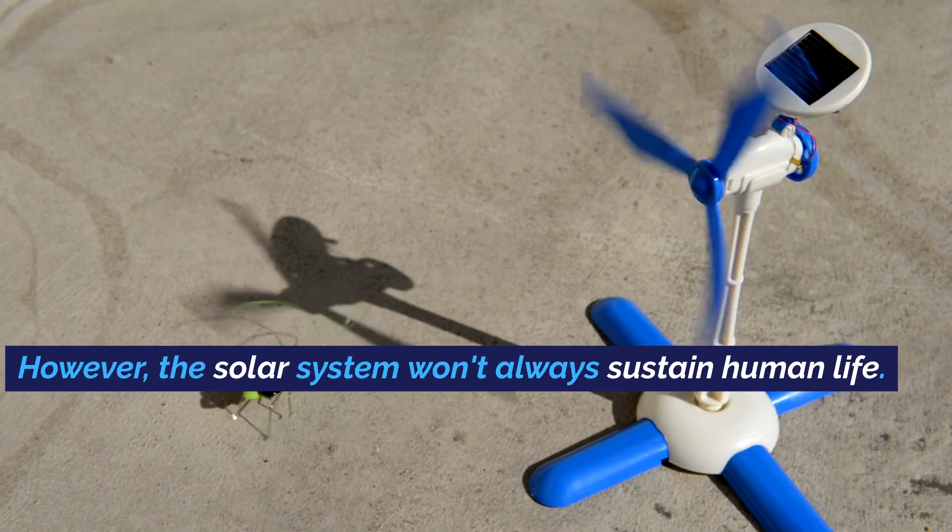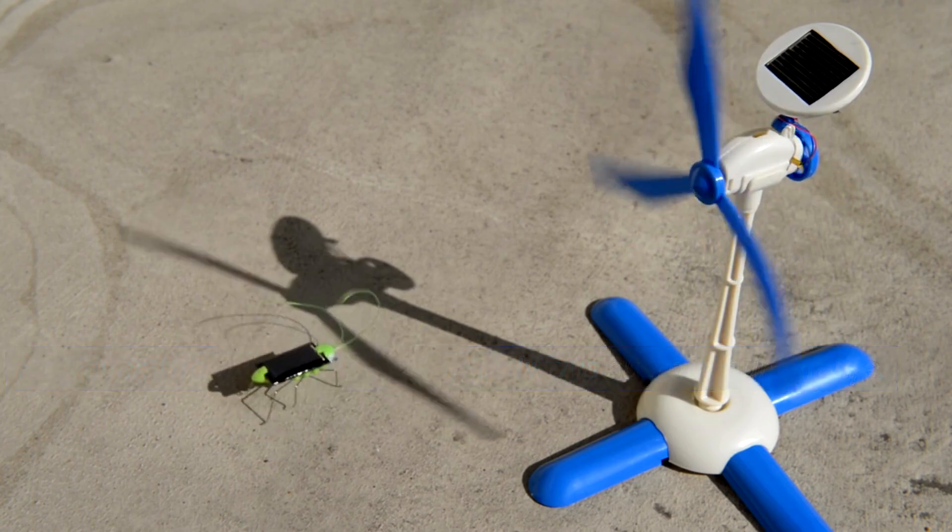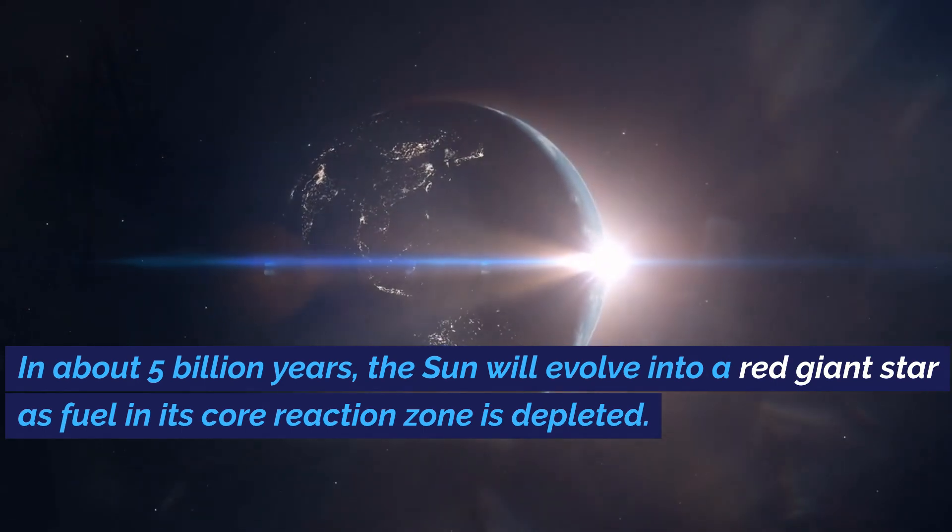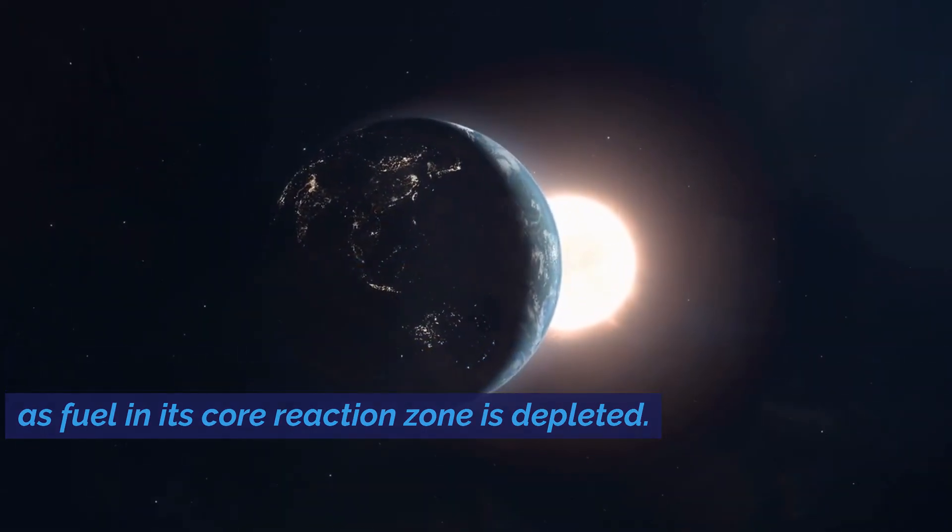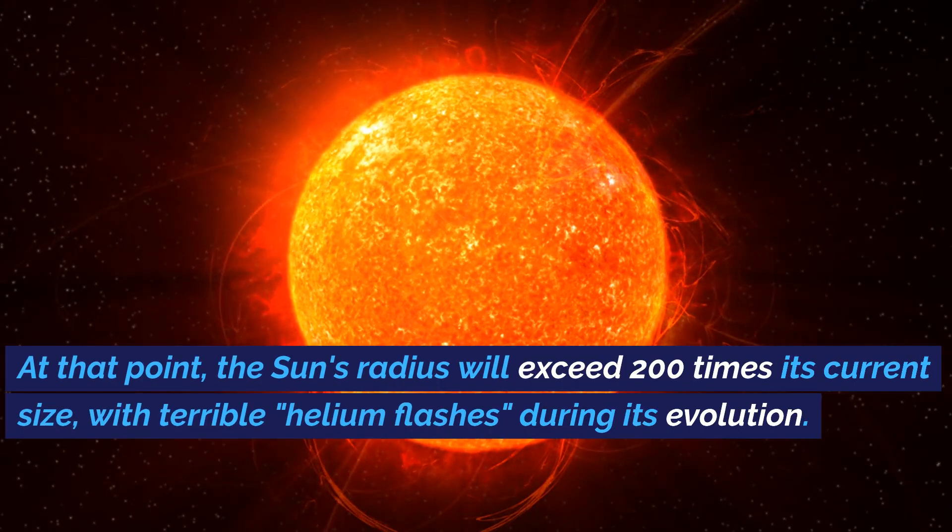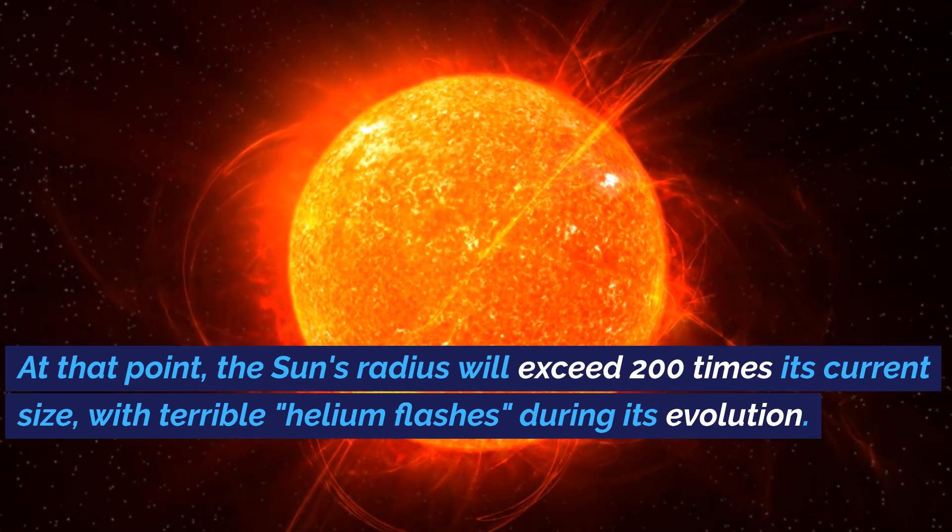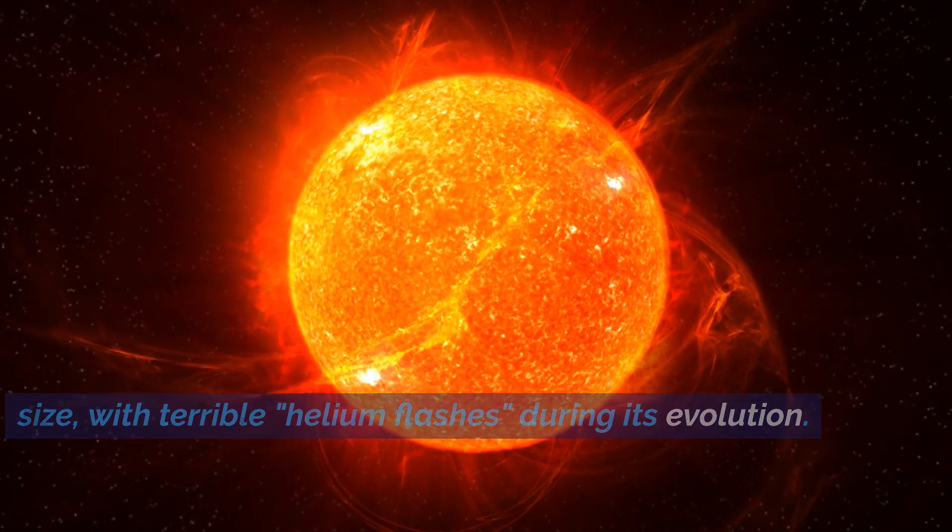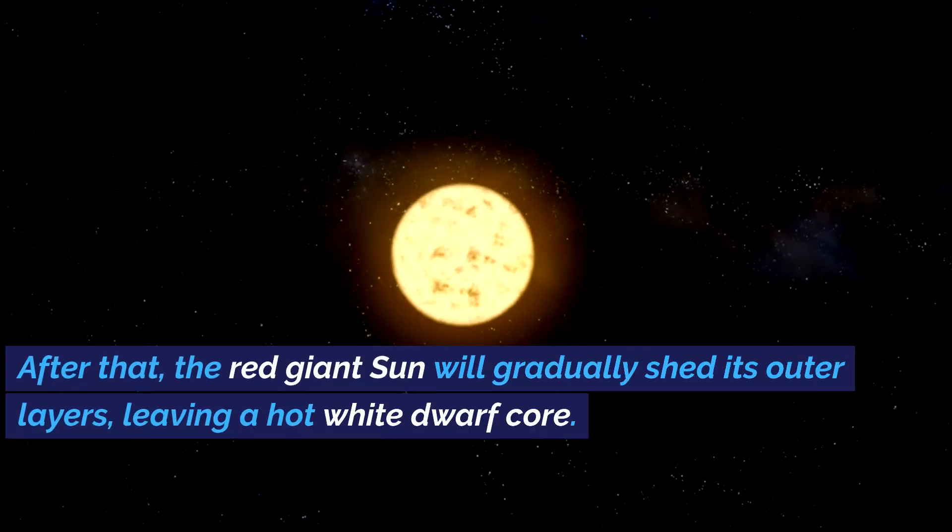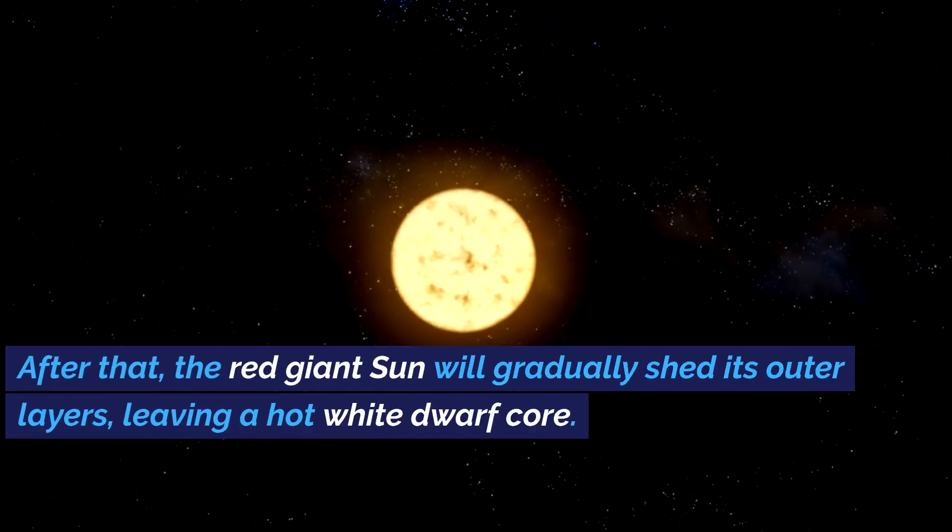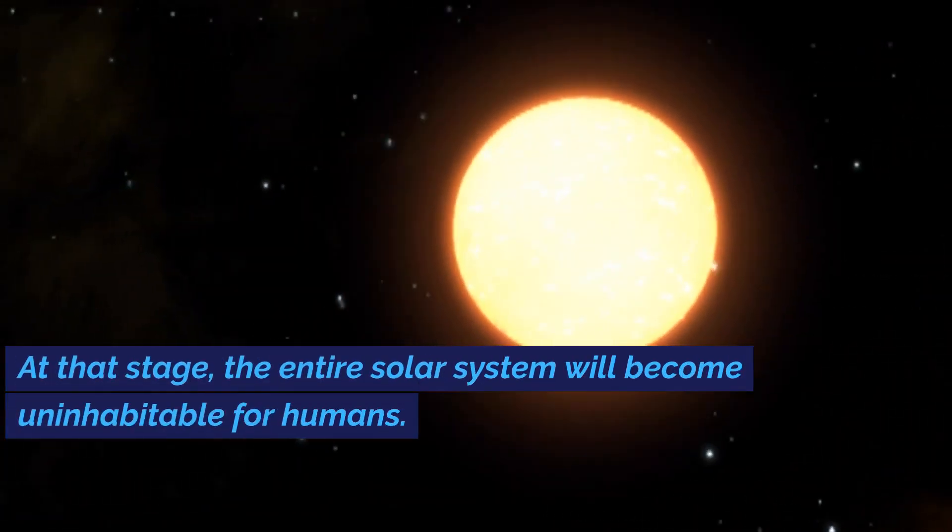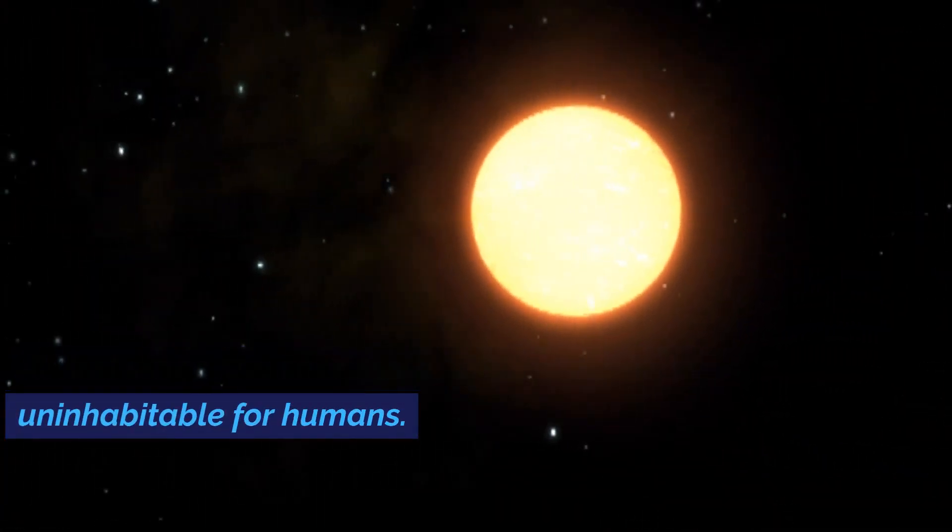However, the solar system won't always sustain human life. In about 5 billion years, the Sun will evolve into a red giant star as fuel in its core reaction zone is depleted. At that point, the Sun's radius will exceed 200 times its current size, with terrible helium flashes during its evolution. After that, the red giant Sun will gradually shed its outer layers, leaving a hot white dwarf core. At that stage, the entire solar system will become uninhabitable for humans.